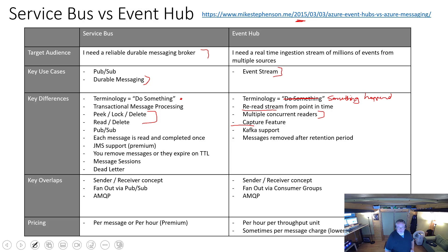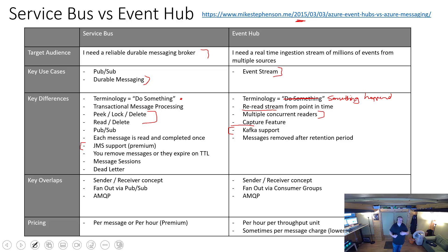There are a couple of feature support differences. Event Hub has support for Kafka, and Service Bus has support for JMS. These support common ecosystems that already use those technologies. Under the hood it's Azure Service Bus or Event Hub, but you would interact with it either through Kafka libraries or through JMS libraries.